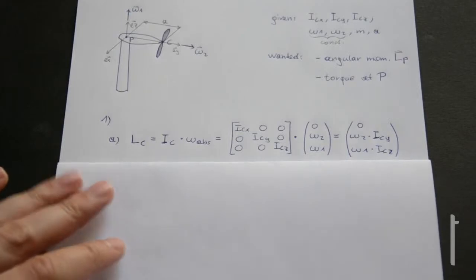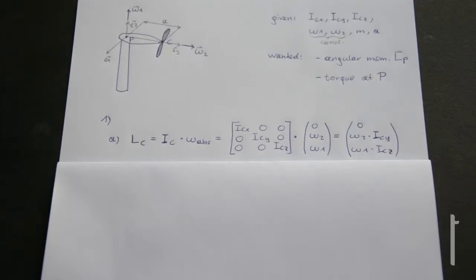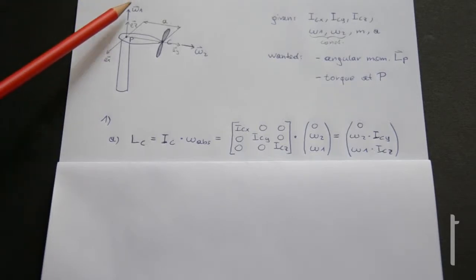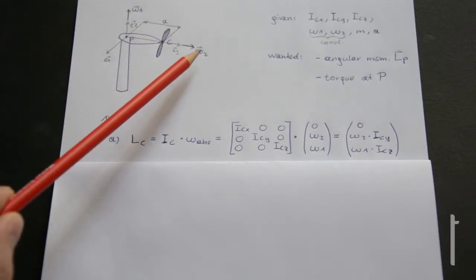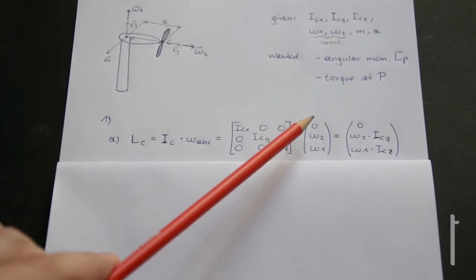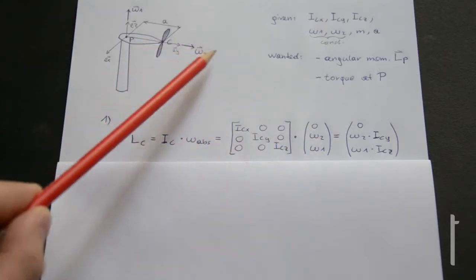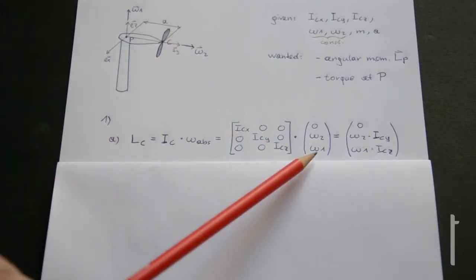The IC here is the moment of inertia tensor — a 3×3 matrix with the mass moments of inertia on the leading diagonal. The absolute angular velocity vector is the sum omega 1 plus omega 2: omega 1 is the vector (0, 0, omega 1) and omega 2 is (0, omega 2, 0), giving a combined vector with omega 2 in the y direction and omega 1 in the z direction.